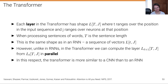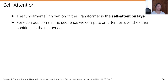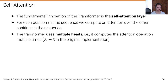Unlike in RNNs, in the transformer we can compute the next layer L+1 from the previous layer completely in parallel — we go from one tensor to the next without sequential relationships. In this respect the transformer is more similar to a CNN than to an RNN, but it's different from a CNN because it uses attention rather than convolutions. The fundamental innovation is the self-attention layer: for each position t in the sequence we compute attention over the other positions. The transformer uses multiple heads — initially a single head was tried, but they split computation into eight heads because it gave empirical benefits.